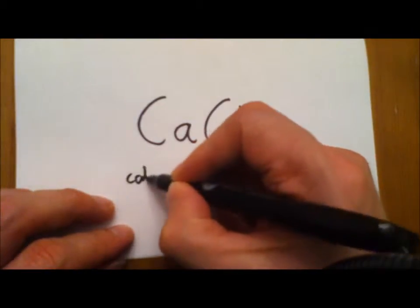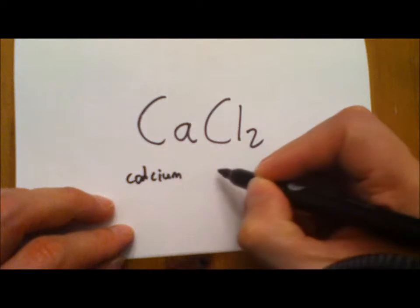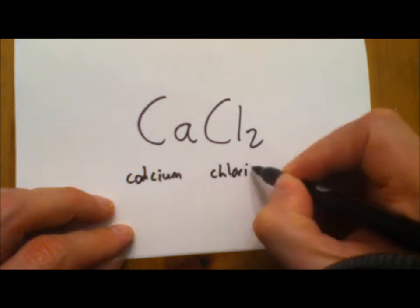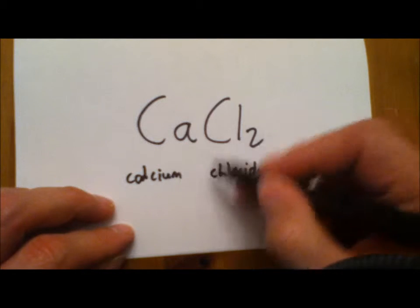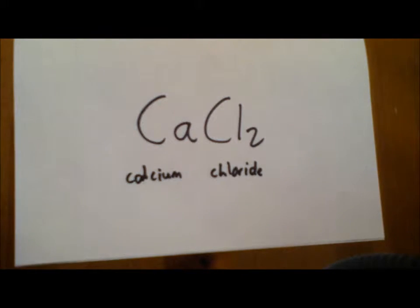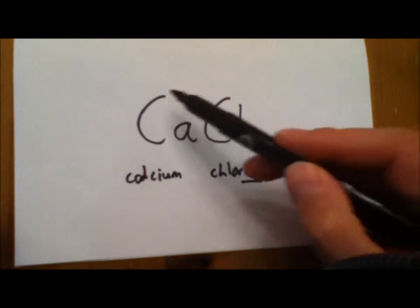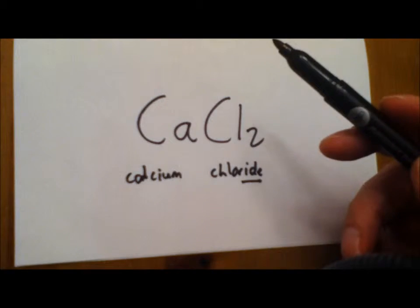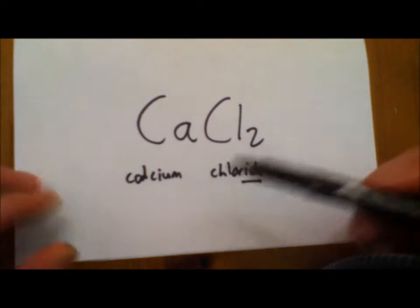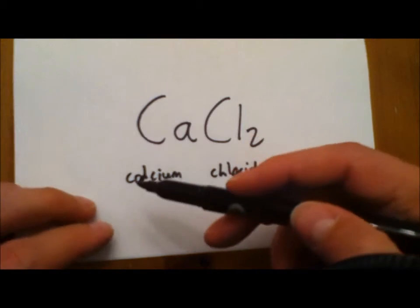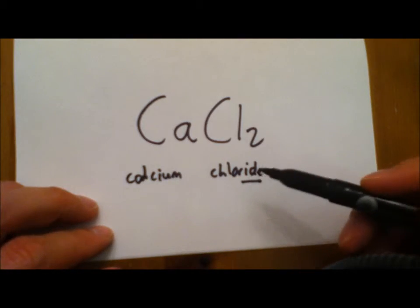Those instructions tell you that you write the name of the metal and then the non-metal. Again, the name of the non-metal you'll find on the back of your periodic table. Always got to end in IDE. And then because the metal only gets one charge, you don't have to worry about Roman numerals. Once you've written the name of the metal and then the non-metal ending in IDE, you're done.